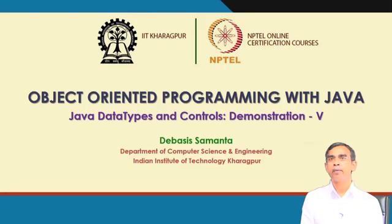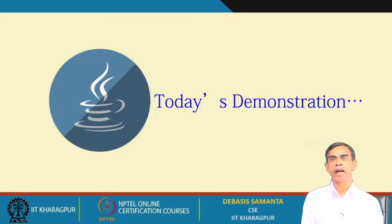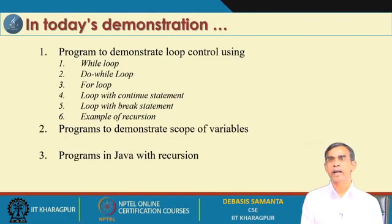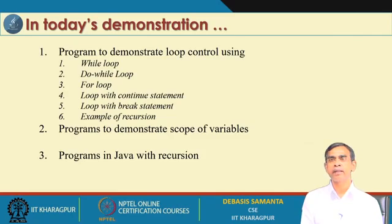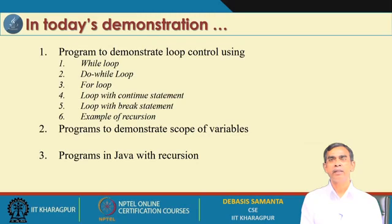In the last module, we learned about the Static Scope Rule in Java and also a little bit about writing recursive programs. In this demonstration, we have a quick illustration about the different concepts regarding scope rules and recursive program writing. Before going to that, we should cover basic control structures. We will discuss loop structures, switch case, scope rules, and Java program writing using recursive functions.